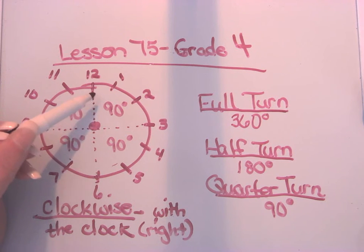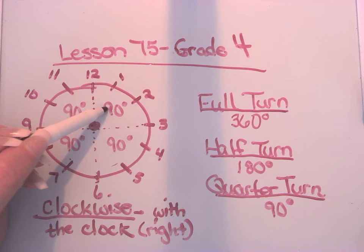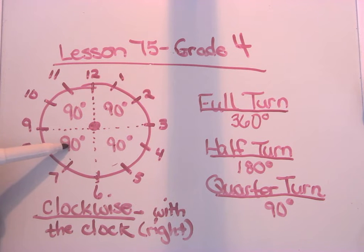And if we go three quarters, we go 90, 180, 270. So 270 degrees would be that three quarters of a turn. And we can just go through some examples that are in your book here.